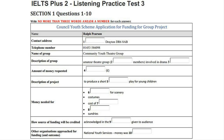IELTS Practice Tests Plus Two, CD2, Test 3, Section 1. You will hear a woman Paula phoning her friend Ralph about an application to the local council for money for their drama club. First you have some time to look at questions one to three on page 66. You will see that there is an example which has been done for you. On this occasion only, the conversation relating to this will be played first.